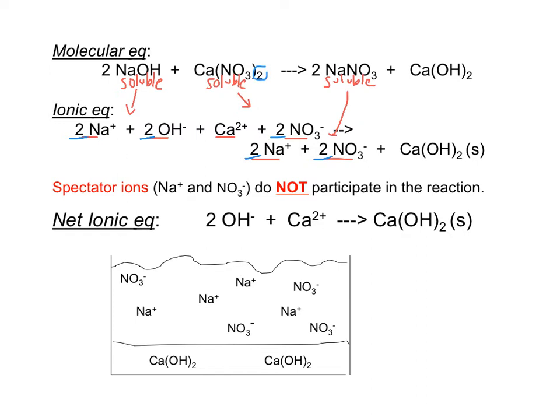Compare the reactant side to the product side in our ionic equation. There are two sodium ions on each side, so we can cancel those, and there are two nitrates on each side, so we can cancel those too. The sodium ions and nitrate ions do not participate in the reaction — those are spectator ions. What's left are the ions directly involved. We can write a net ionic equation, and therefore we predict that this reaction does occur.